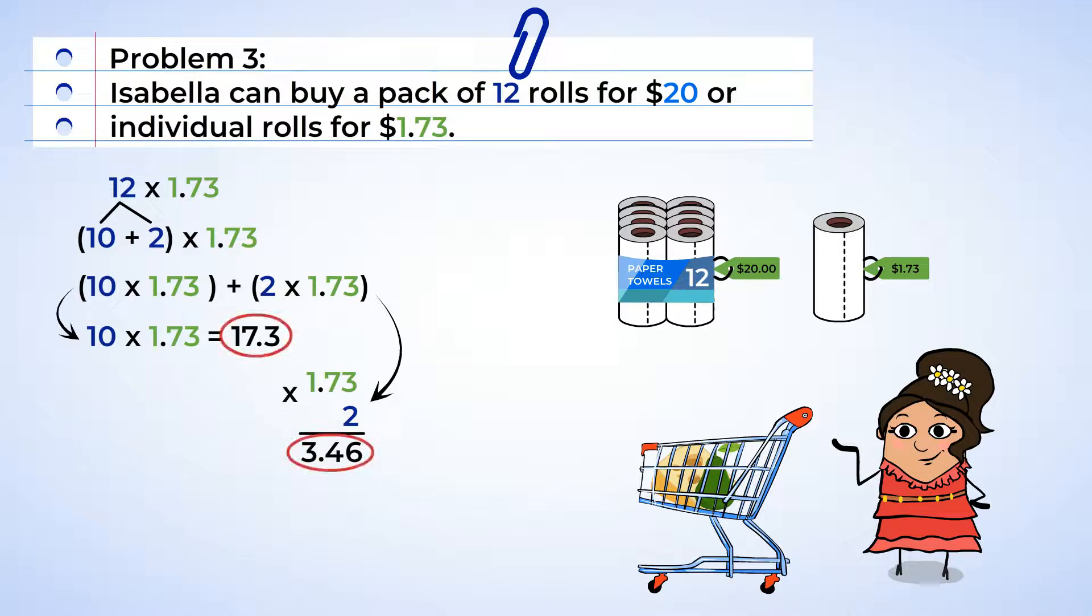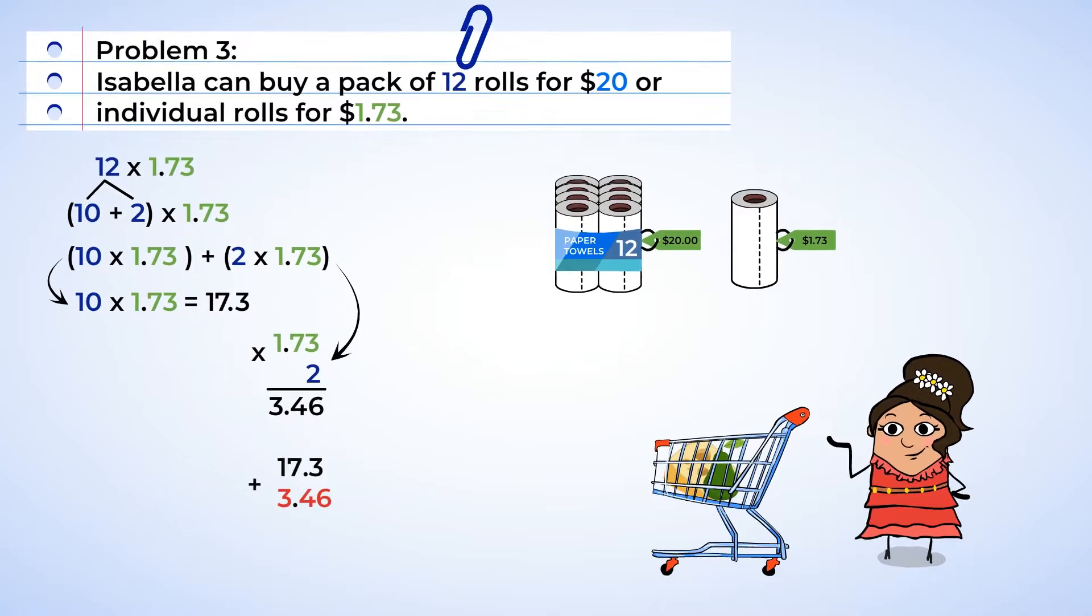And now it's time to add these values together. So we've got 3 and 46 hundredths plus 17 and 3 tenths. All right, first we're going to line up the place values. And now we can add. So 0 plus 6 is 6. 3 plus 4 is 7. 7 plus 3 is 10. Place the 0, carry the 1. 1 plus the carried over 1 is 2. And now we know if Isabella buys the paper towel rolls individually, it'll cost her $20.76.